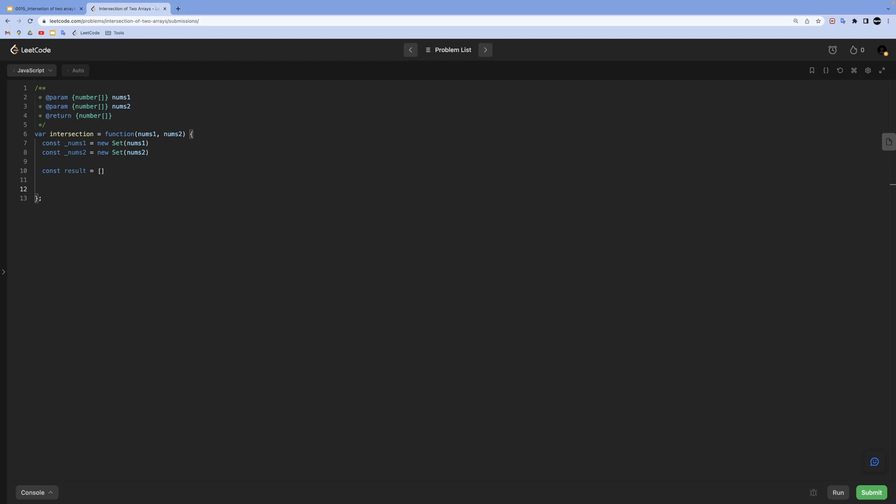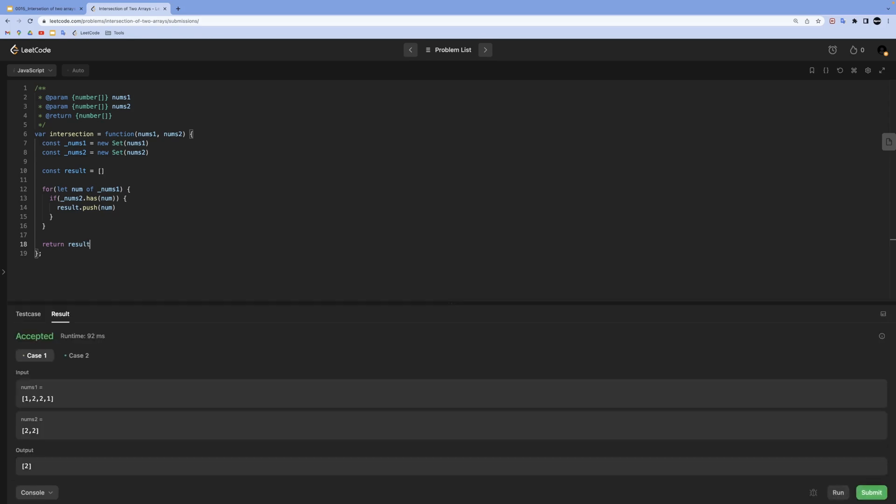Then we need to iterate over any one of those sets and check for each value inside of that to see if it exists in the other set. In order to iterate over a set's values in JavaScript we can use for of statement, but you also can use forEach as well. We will use for of, so I'll do for let num of nums1Set. For each of that inside of this for loop we will do our constant check: if nums2Set.has this number, if that is the case we need to do result.push num. At the end we need to return our result. Now if I run this test cases are passing and if I submit everything is good.